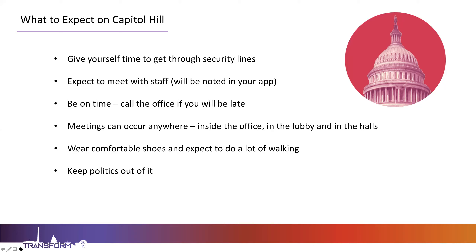Also know that meetings can occur anywhere—they might be inside the office, in the lobby, or in the halls of the building. We've definitely been in meetings where you start meeting with a member of Congress and they have to walk to go vote, and you have a conversation with the member on the way there. That's just one of the features of having meetings on Capitol Hill. Also, oftentimes these offices are very small, so you might just be finding a place to have a quick, quiet conversation. You will do a lot of walking—this will also be at the end of a three-day conference—so please wear comfortable shoes.